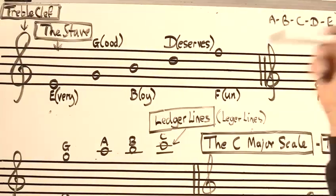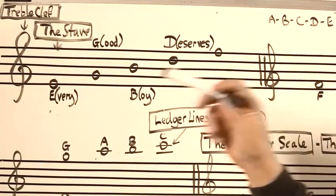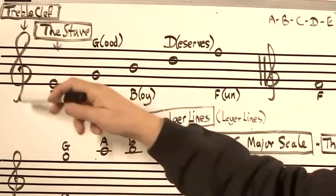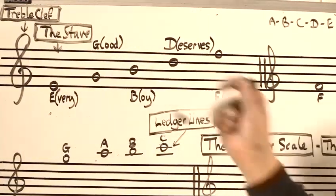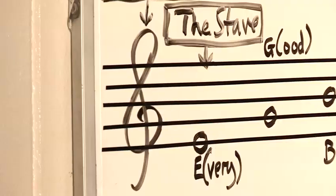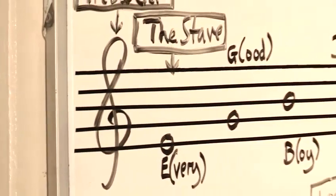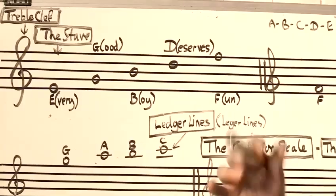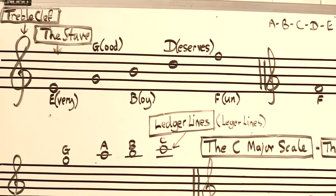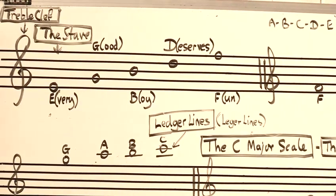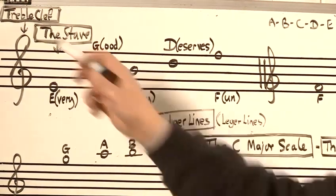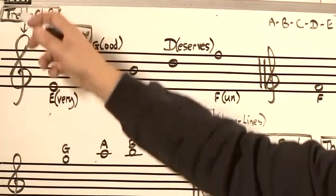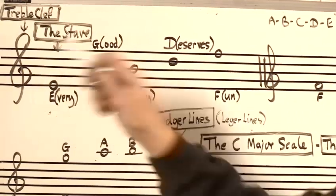For the purpose of this we're going to use the treble clef, which is for guitar, for vocals, for saxophones and this kind of thing, the right hand of the piano — and it's called the treble clef here.